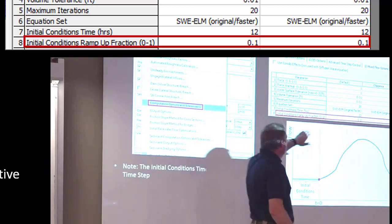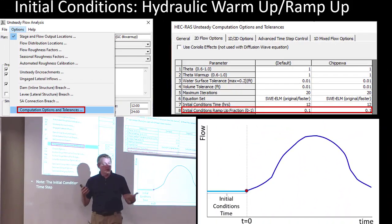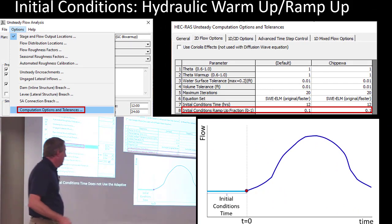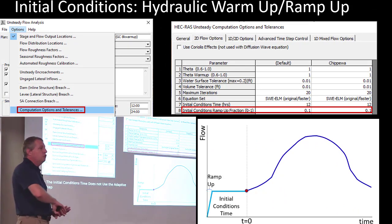So in this case, we're going to take the first 10% of your initial conditions, which in this case is 1.2 hours, and we're going to use that to ramp up into your initial conditions.